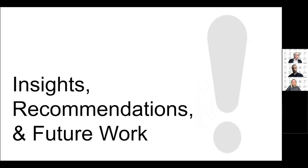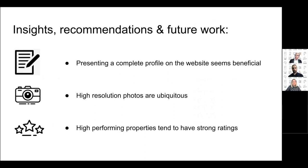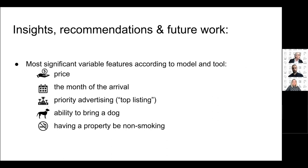To summarize, we found that having a complete profile on the website is very beneficial — a number of homeowners choose not to list a price, which appears to work against them. High-resolution photos are now ubiquitous, so not having them would be a significant negative. High-performing properties tend to have strong ratings. Our model highlighted that the most actionable variables for homeowners are: price, month of arrival, top listing status, allowing dogs, and having a non-smoking property.